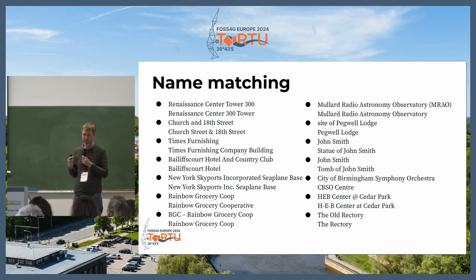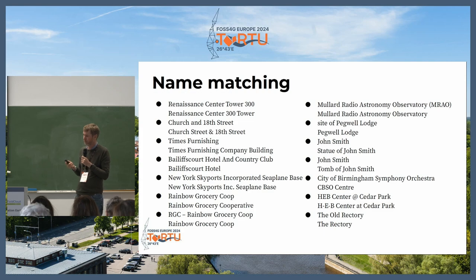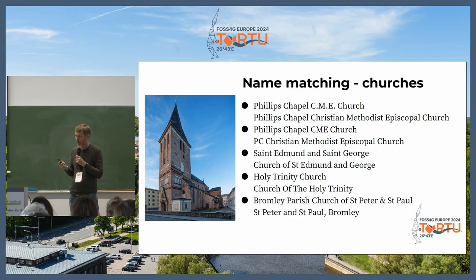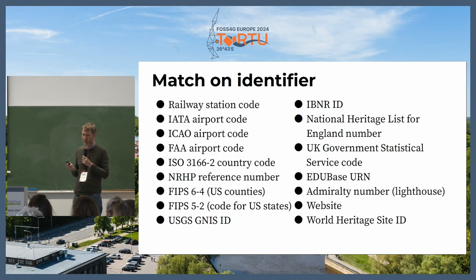For name matching, I do normalization — I don't look for an exact string match. I lowercase things, strip out punctuation, and try reordering the names. I'm not using any large language models or AI yet; I've tried to see how far I can get without AI. I've also got special handling for church names, because there are a lot of churches and different ways of writing them — and that picks up a lot more matches. For matching identifiers, railway stations often have a code, as do airports — these codes exist in both systems, so I can match on any of those identifiers.